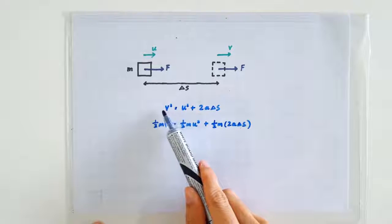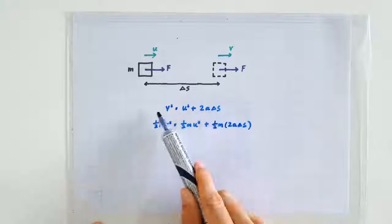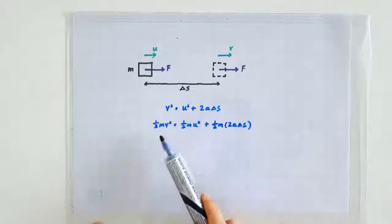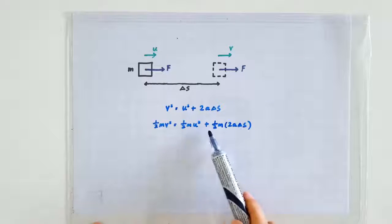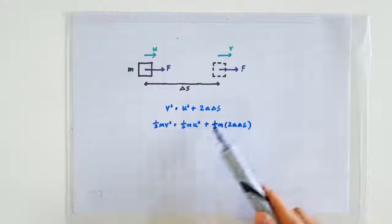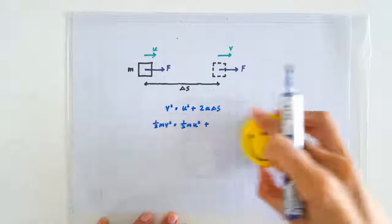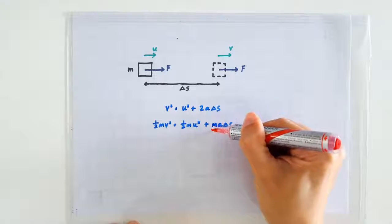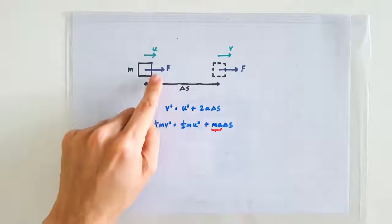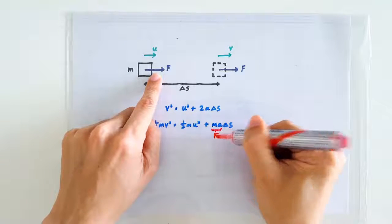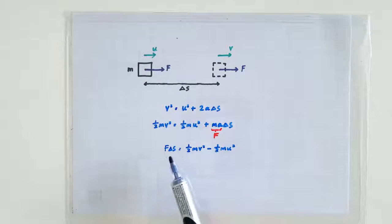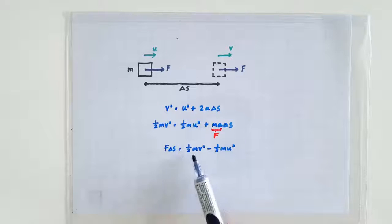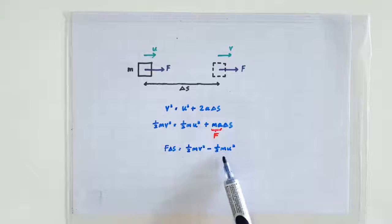Something tells me that I should multiply half m to both sides of the equation. So I get half mv squared is half mu squared plus this term here. The two can be cancelled away, leaving us with ma delta s. m times a is of course the constant force F. Rearrange the equation and we get F times delta s is half mv squared minus half mu squared.